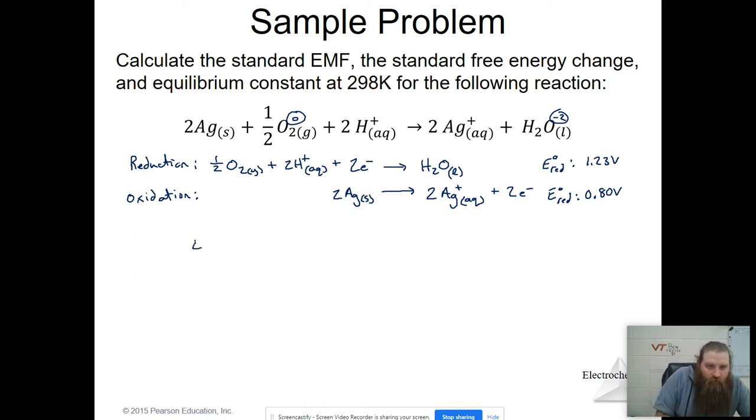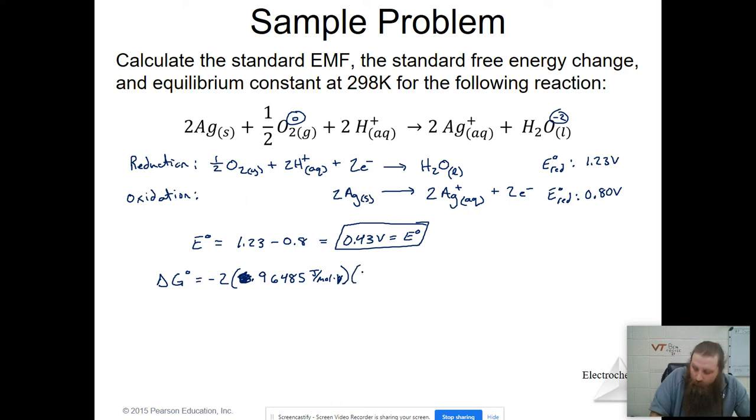When I calculate E prime, this is an intensive property, so it hasn't changed at all. It's still 1.23 minus 0.8, and that's going to give me 0.43 volts, which is exactly the same as it was in the problem before. But now when I calculate delta G, I get negative two, because I only have two electrons involved now, times 96,485 joules, and I have 0.43 volts. So we can see that the delta G has gone down by a factor of two, because this is the number that I changed. That's going to be kilojoules per mole.